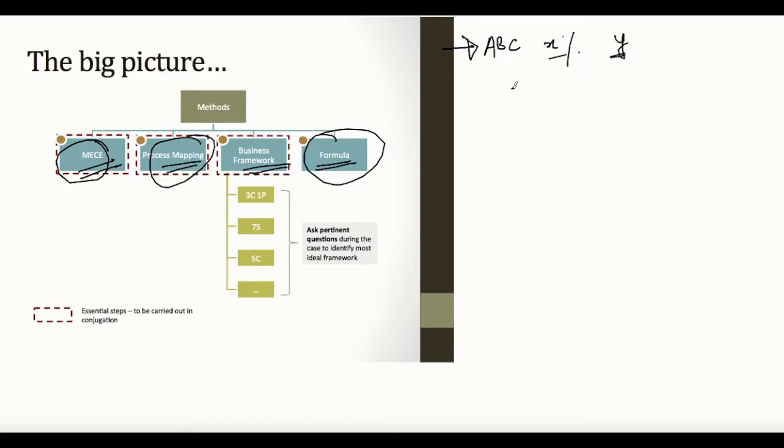So first is MECE. Most of the profit and loss problems, once you have clarified your initial questions, you will have a structure which looks something like this. Profit is a function of revenue and cost, right? We are using MECE, which is mutually exclusive and collectively exhaustive. You are breaking your problem down—in this case, the profit—into two parts such that both these parts are mutually exclusive. So revenue and cost have no overlapping aspects, and collectively they are exhausting. There is no third element here.